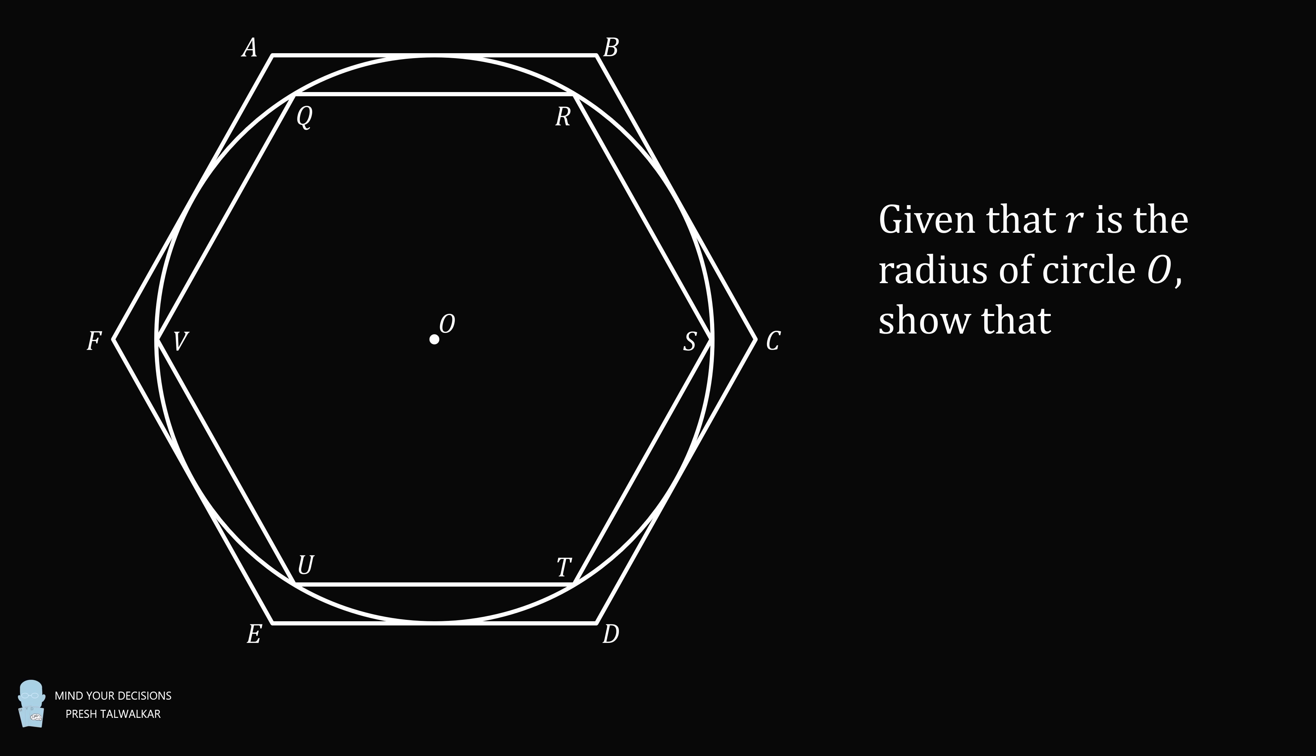Given that R is the radius of circle O, show that 3 is less than pi is less than 2 root 3.